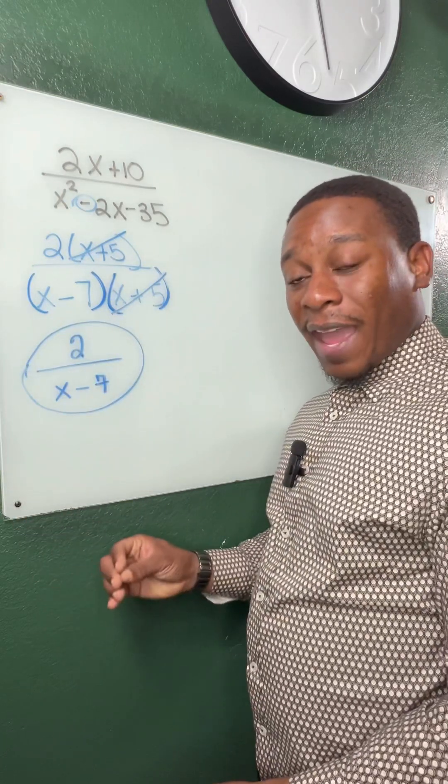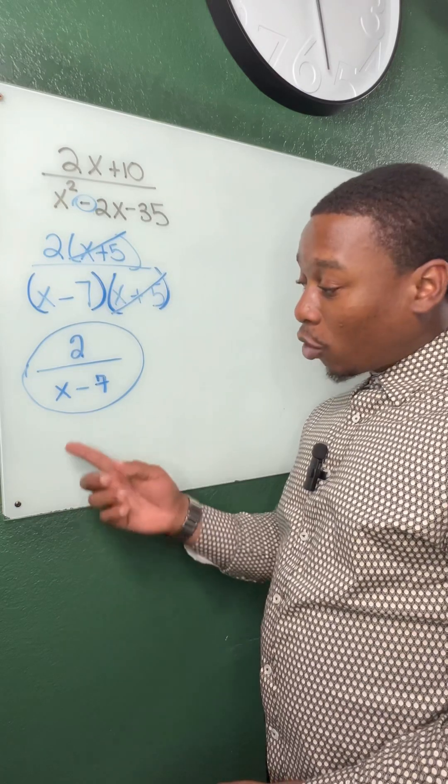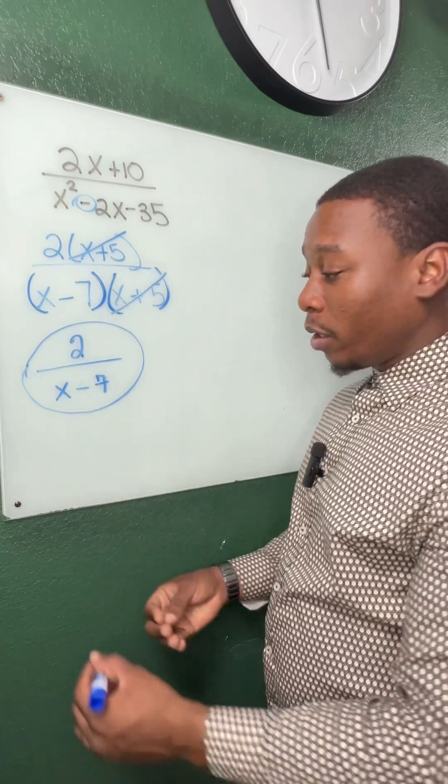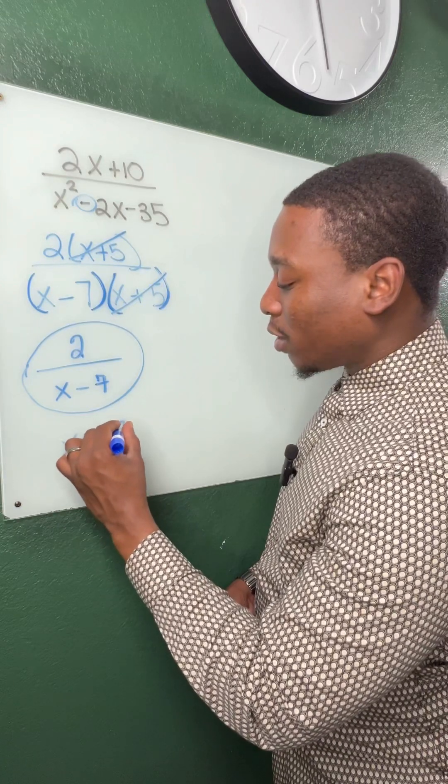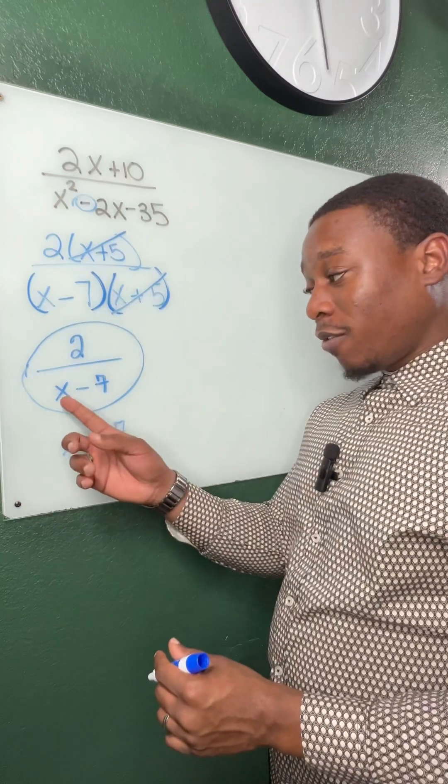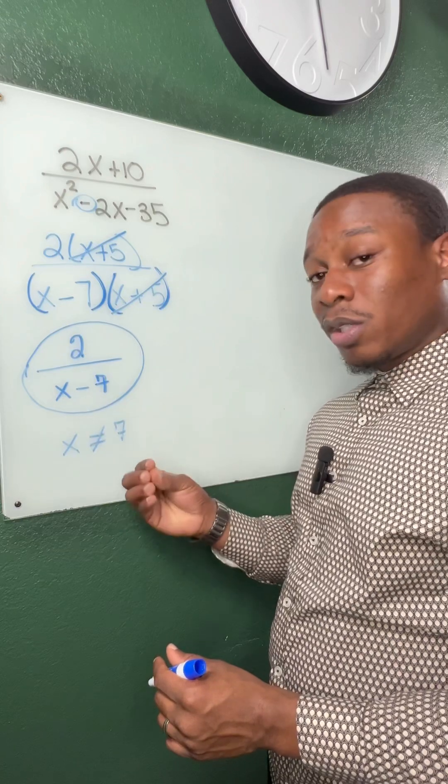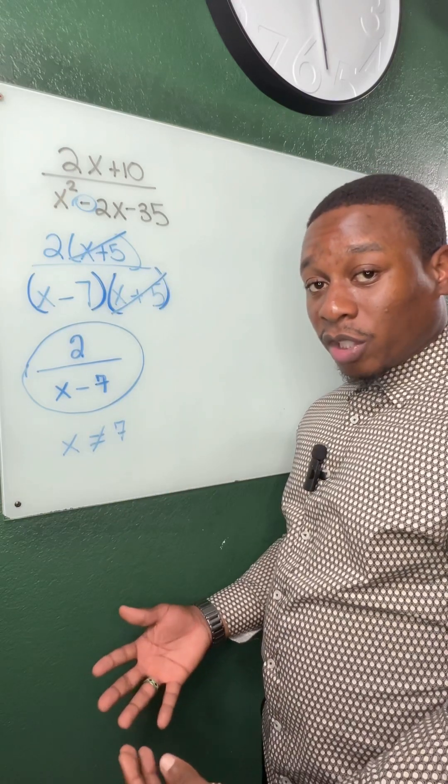And if they ask us for any restrictions or talk about what x cannot be, we know that x cannot be equal to positive 7. Because when x is 7, 7 minus 7 is equal to 0. That is an undefined function. Thank you.